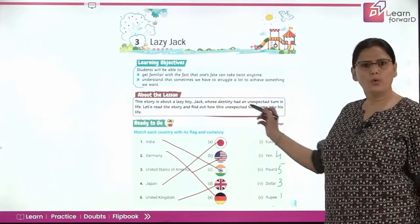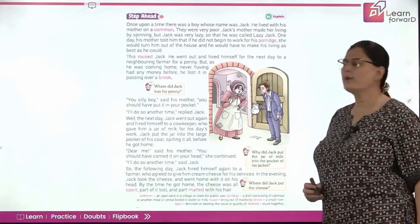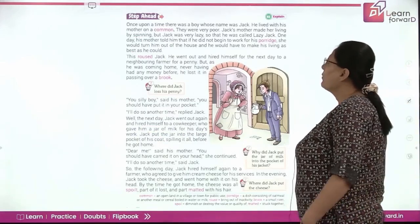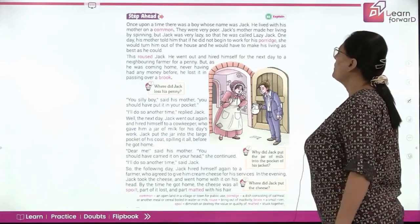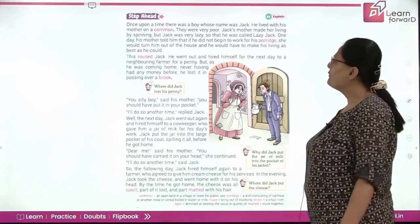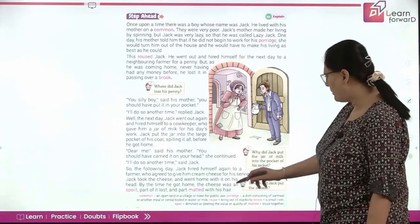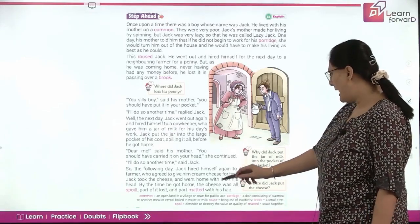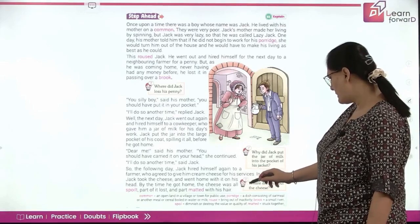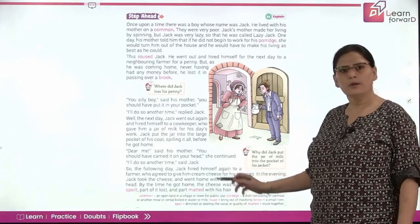So we've done this activity. Coming to the next, let's read the story. Once upon a time, there was a boy whose name was Jack. He lived with his mother on a common — on a common means an open land in a village or town for public use.